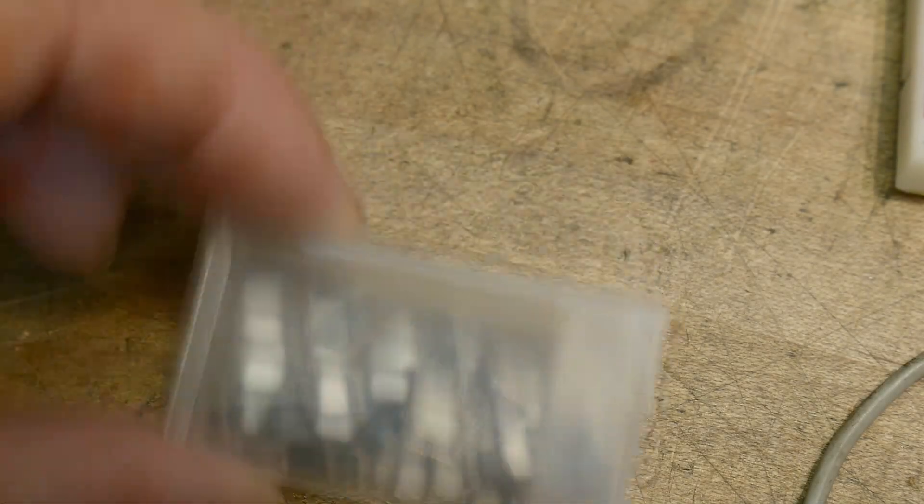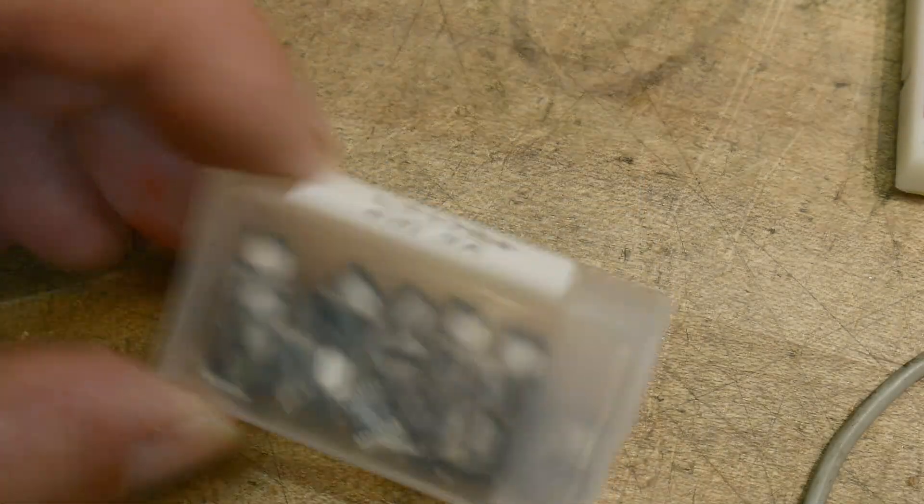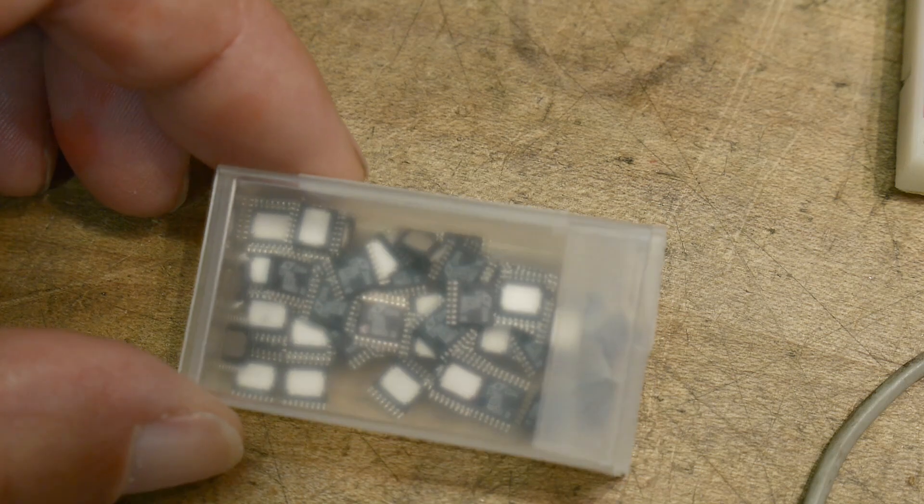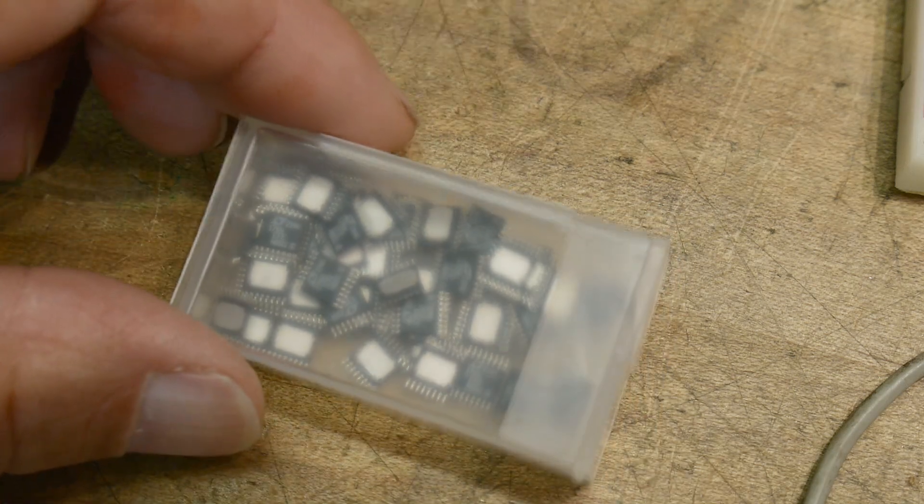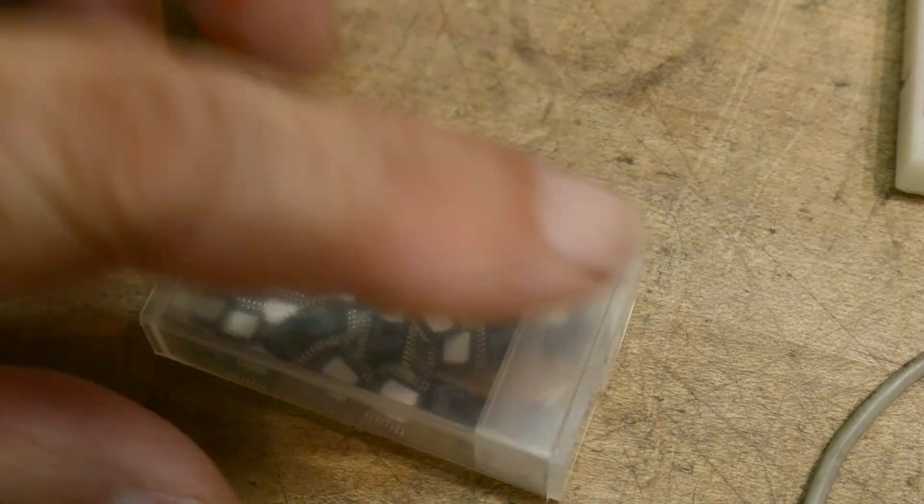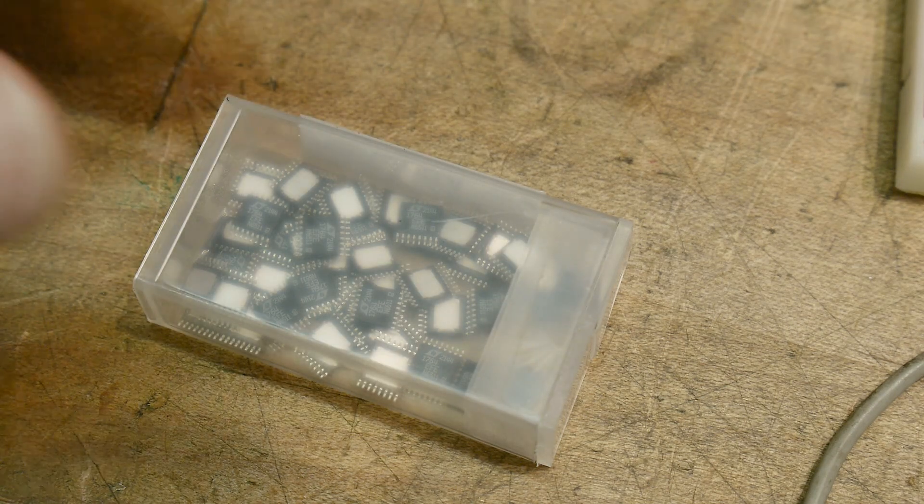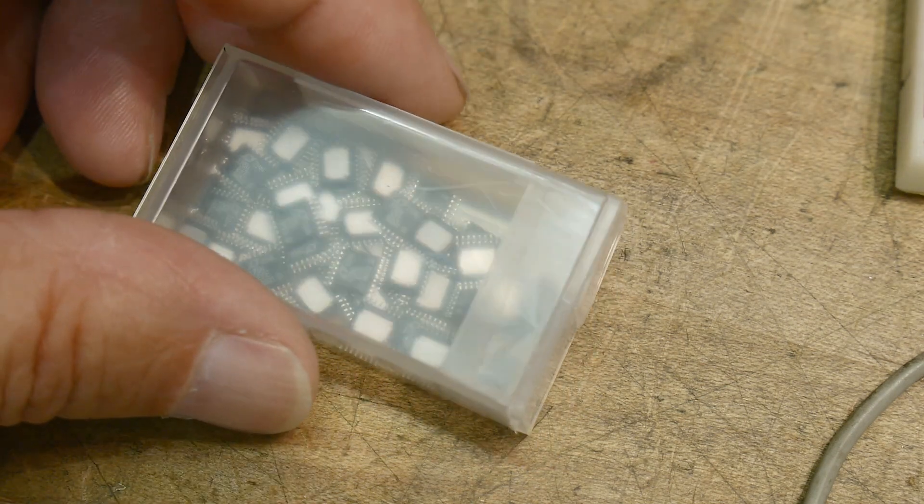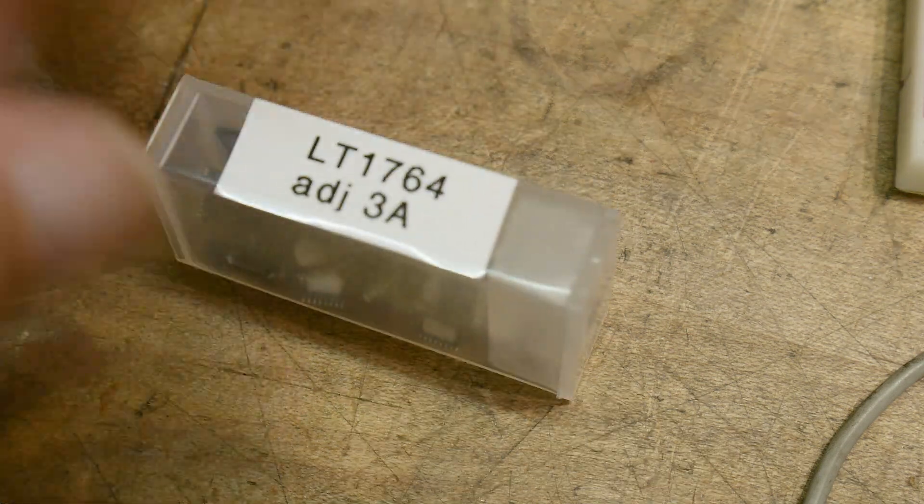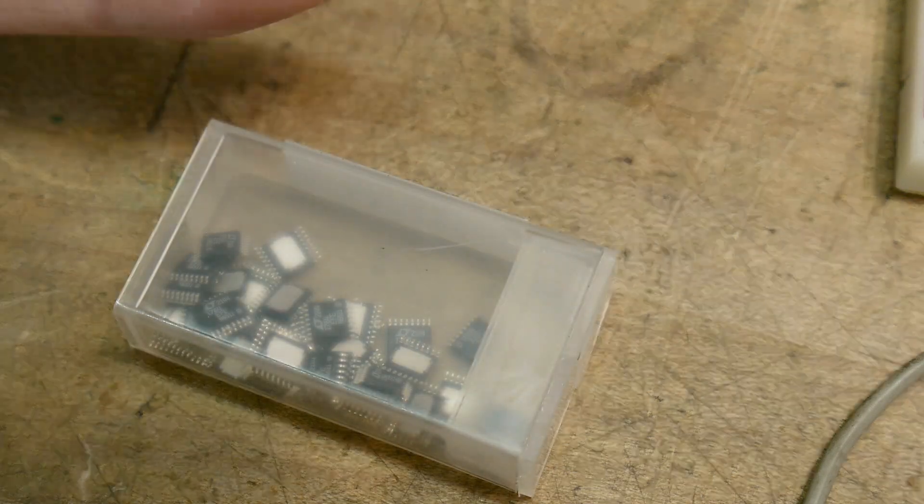Alright, chip of the day. I have a little box here full of chips that I took off the reel. I like to store them in these little boxes - these are for bead craft. If your wife does beading, you can go steal these boxes from her. I think you can get them at stores like Michaels or Joann's.